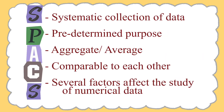Now let us see what the acronym SPICS stands for. S in SPICS stands for systematic collection of data. P stands for predetermined purpose — the purpose of collecting data is decided in advance, as it helps in systematic collection and analysis of data. A stands for aggregate or average. Statistics is the aggregate of facts. Single number does not constitute statistics as it cannot be compared. For example, if I say the height of a particular student is 5 feet 6 inches, this is numerical data. But if I say the average height of a particular class is 5 feet 4 inches, then it is considered statistics.